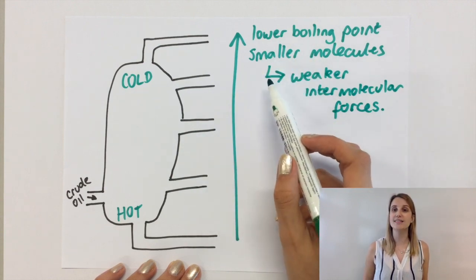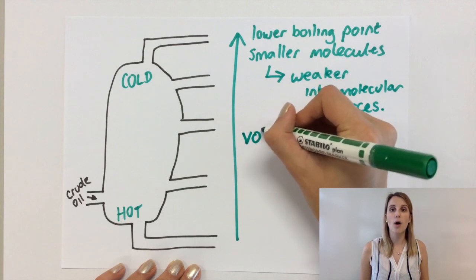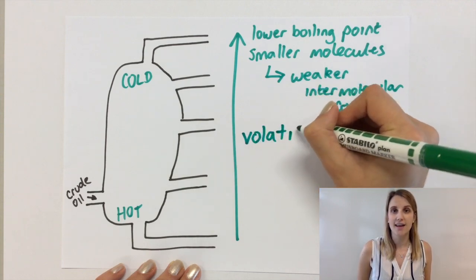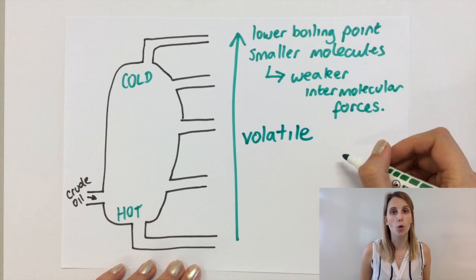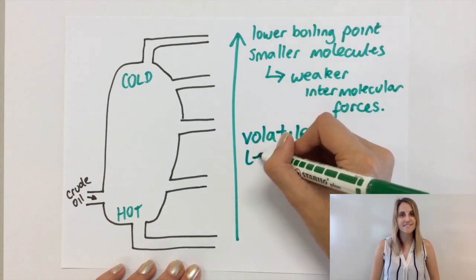Other properties that you need to know about is the ones at the top are also way more volatile. Now that means that they're going to evaporate far more easily, and the ones at the top are also less viscous.